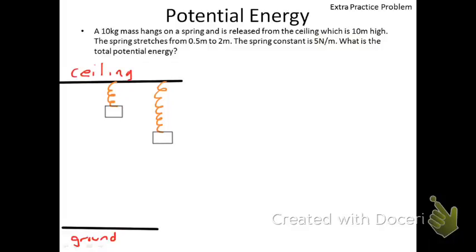Hello guys and welcome to this video on potential energy. We are going to get an extra practice problem on potential energy. The problem reads: a 10 kilogram mass hangs on a spring and is released from the ceiling which is 10 meters high. The spring stretches from 0.5 meters to 2 meters. The spring constant is 5 newtons per meter. What is the total potential energy?